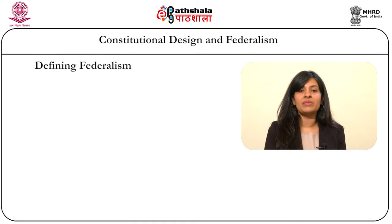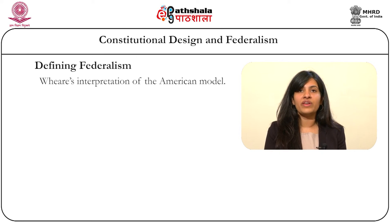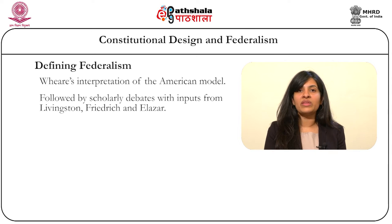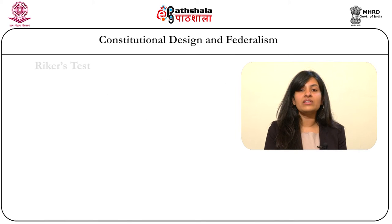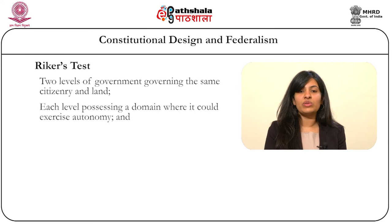Defining federalism has been an academic battle, with attempts being made to include as many aspects of this system as possible. It started with expanding Ware's interpretation of the American model, often considered to be the epitome of modern federalism. What followed were scholarly debates with inputs from Livingston, Friedrich and Eleazar, extending understanding of federalism from the original American model to include other arrangements like condominiums, leagues and associated statehoods. However, Riker's contribution can be said to be the most lasting one. His simple test laid down three prerequisites for a system to be called federal: two levels of government governing the same citizenry and land, each level possessing a distinct domain where it could exercise autonomy, and some form of guarantee of this autonomy. Riker's theory, though helpful in a general understanding of the concept, does not account for every type of federal state.